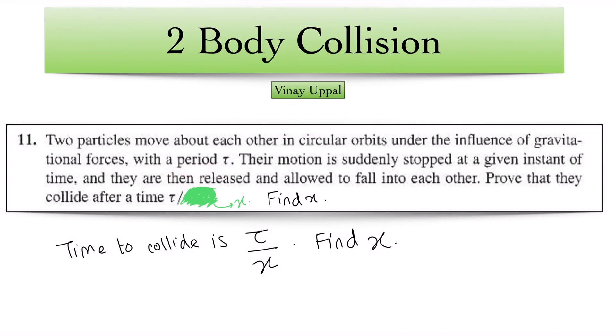Two particles move about each other in circular orbits under the influence of gravitational forces with a period tau. They are moving about the centre of mass. There is no external force so the centre of mass will be stationary. The motion is suddenly stopped at a given instant of time and then they are released and allowed to fall into each other.